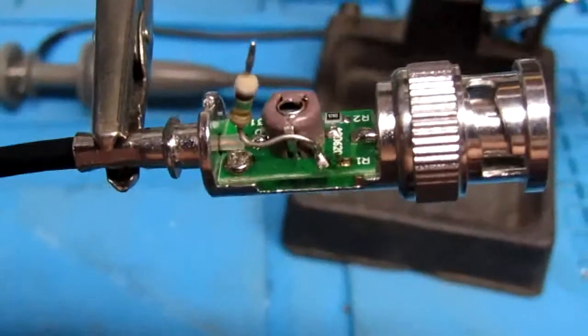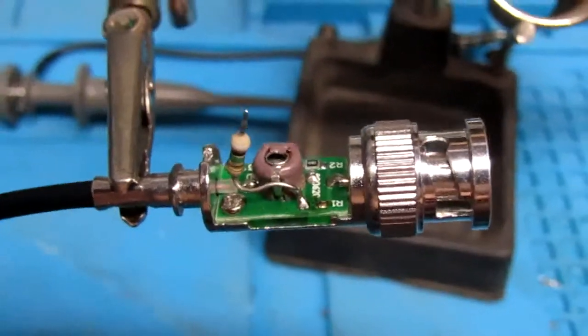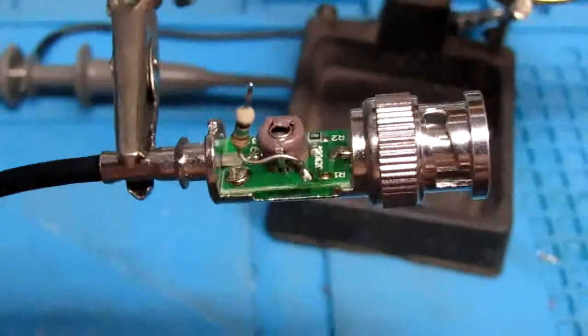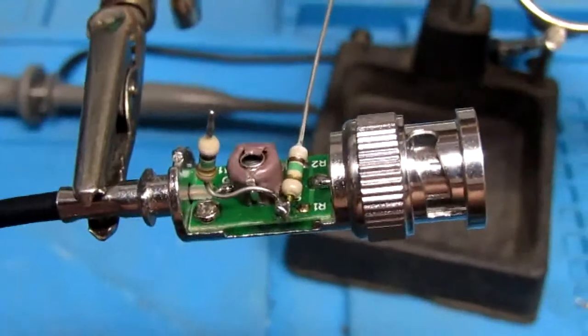The first one is installed. You leave the second leg unsoldered until you get the second resistor put on the same pad. Okay, second one is installed.